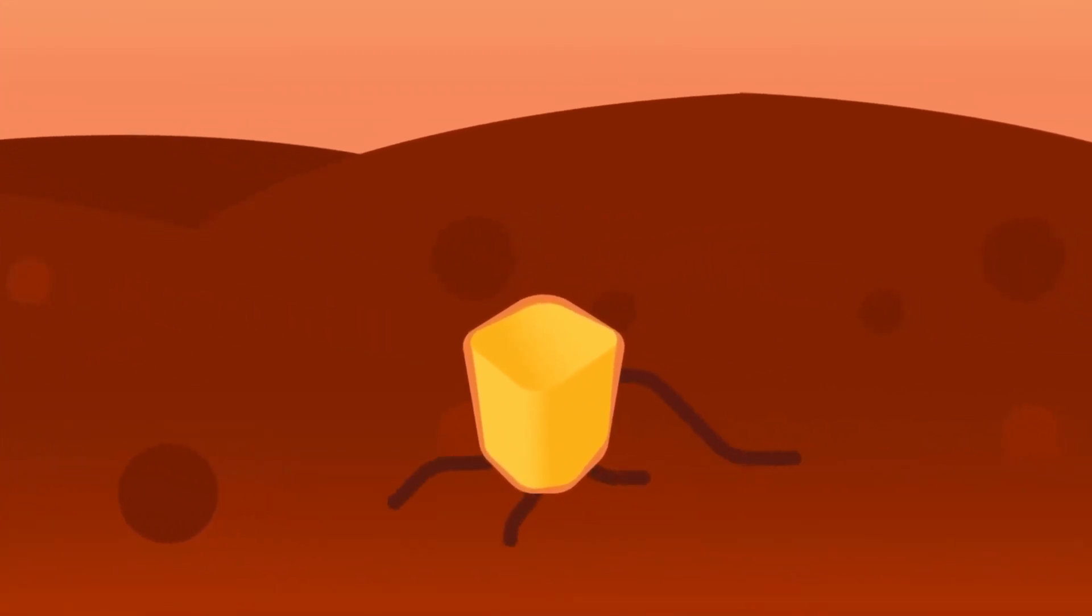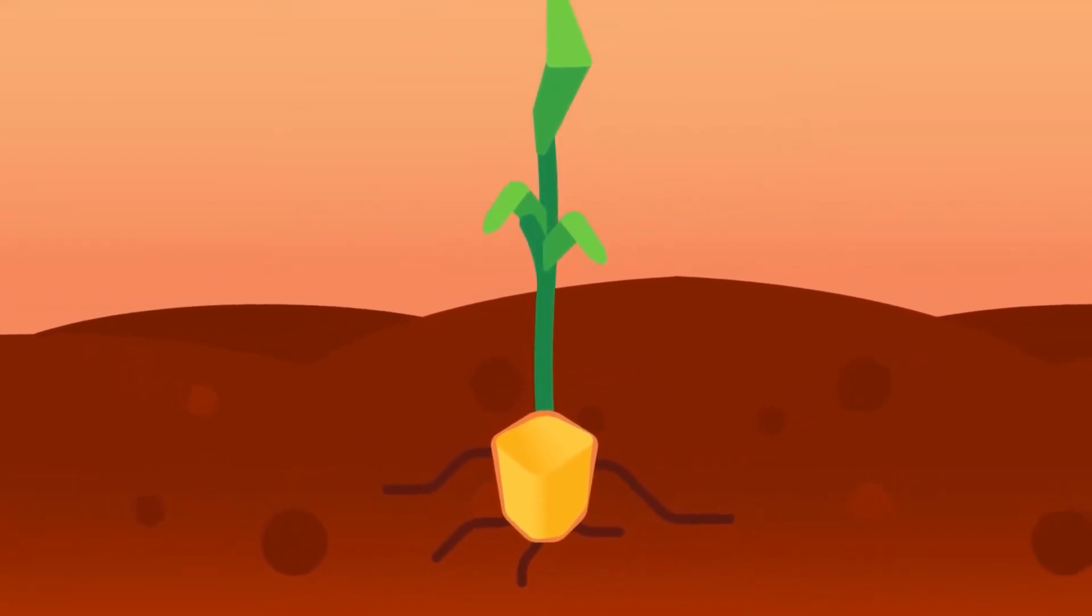While in the case of hypogeal germination, the cotyledons remain below the surface of the soil, for example, maize and broad bean.